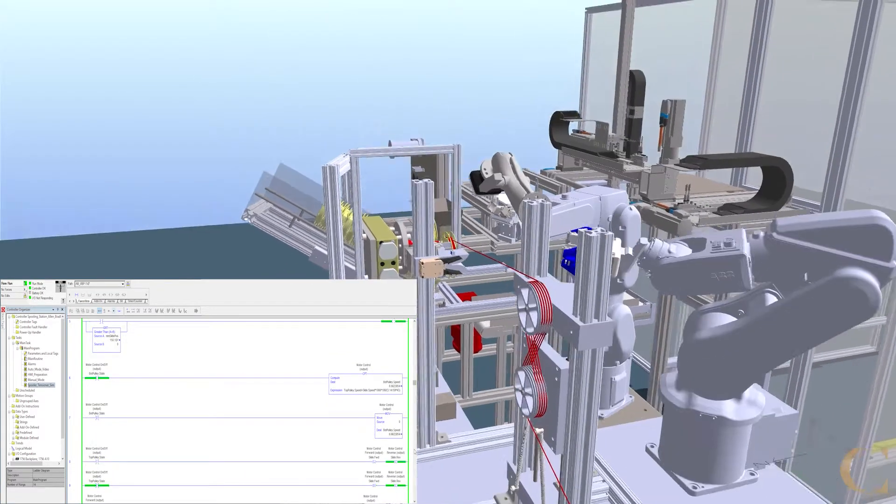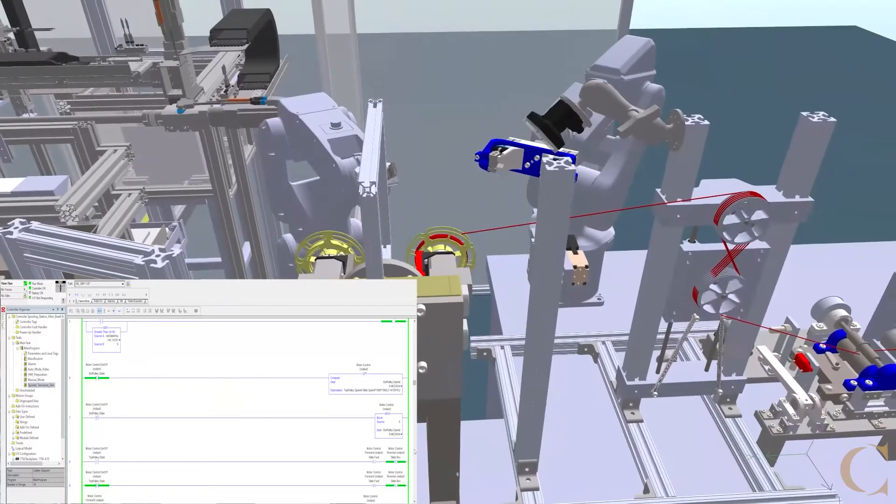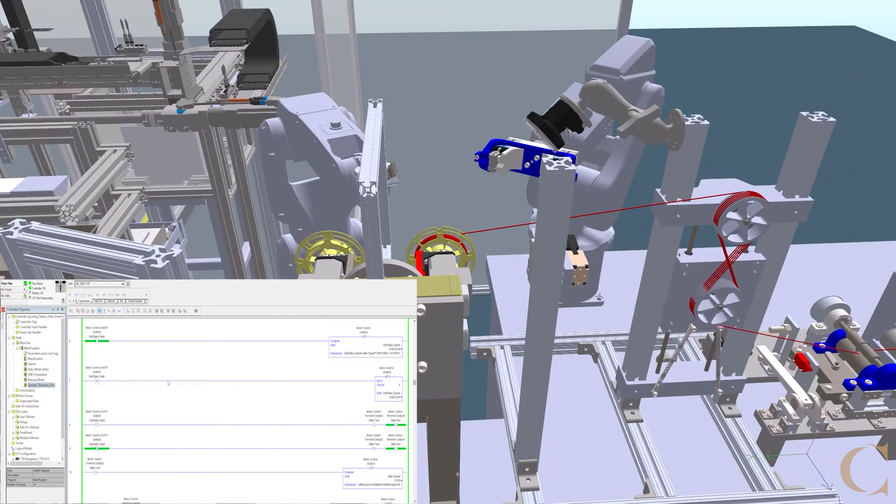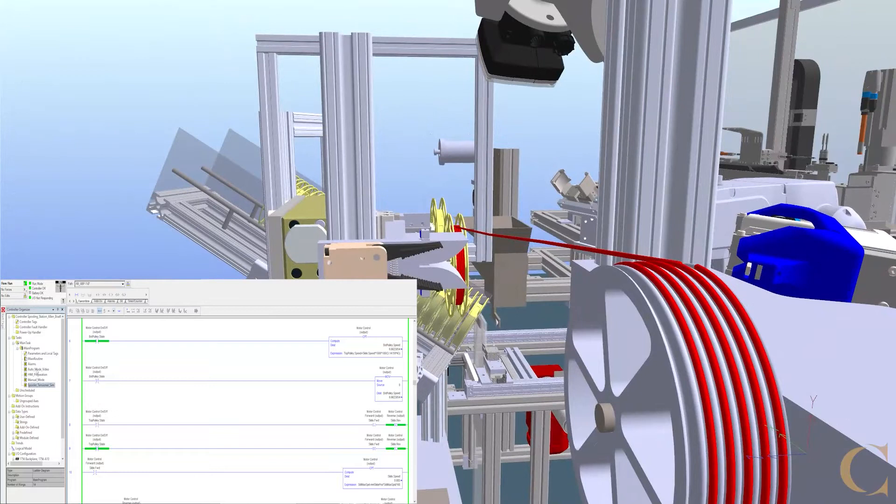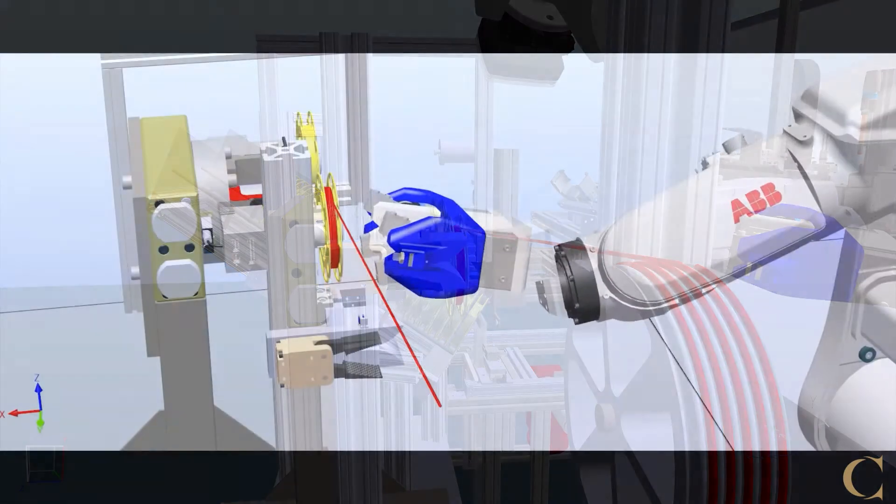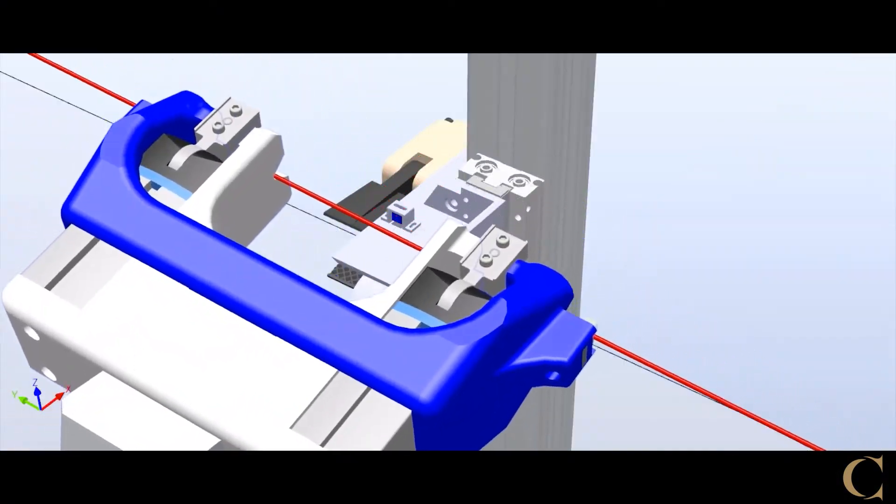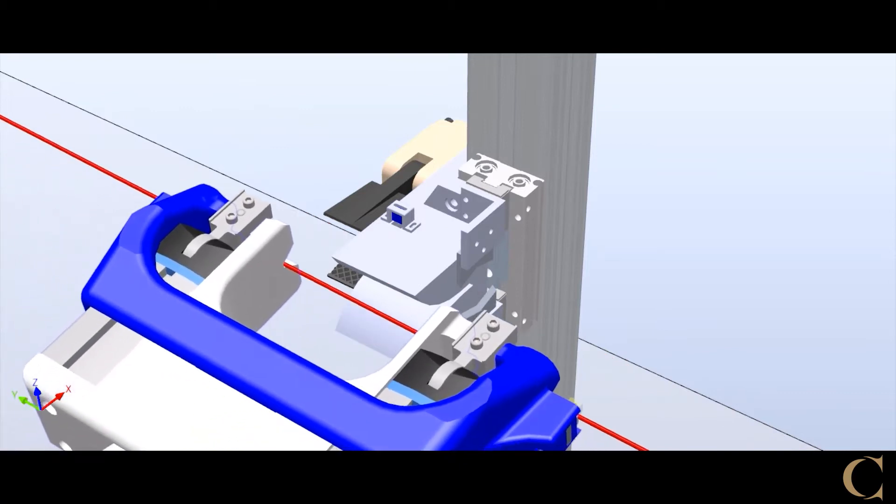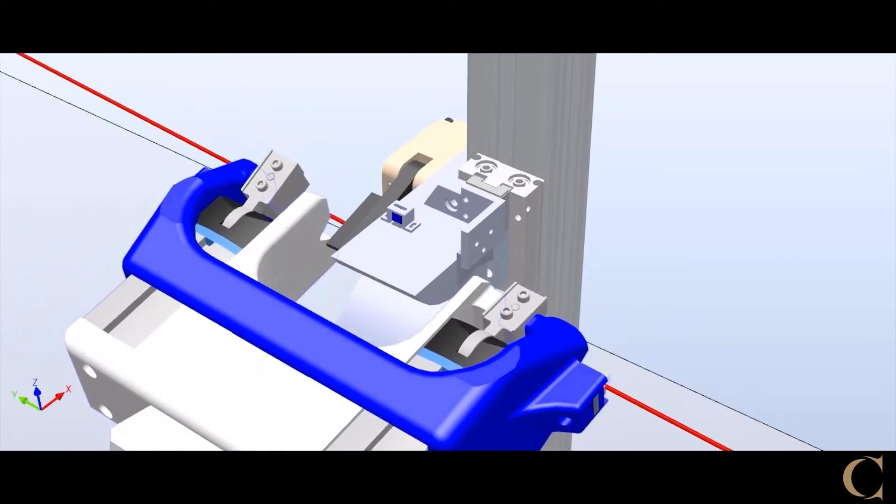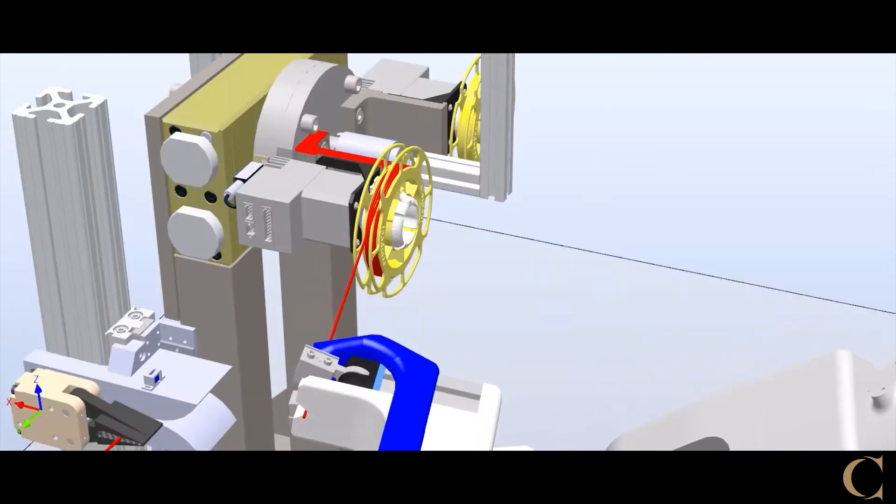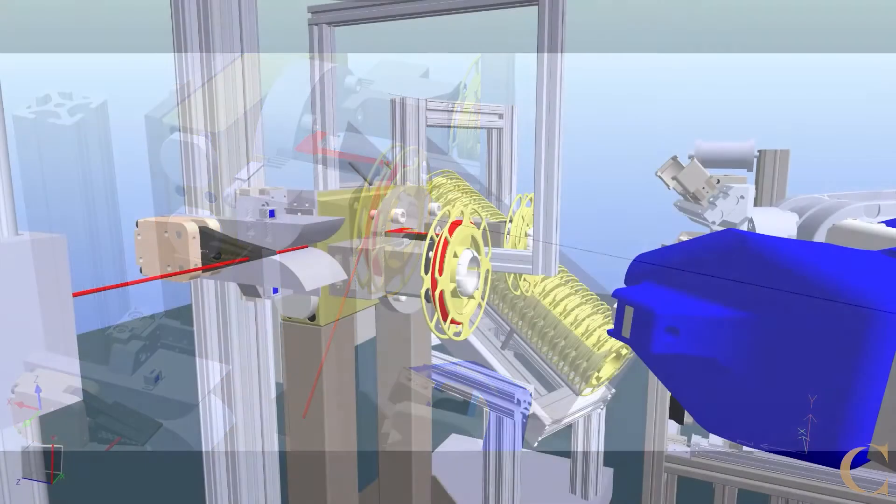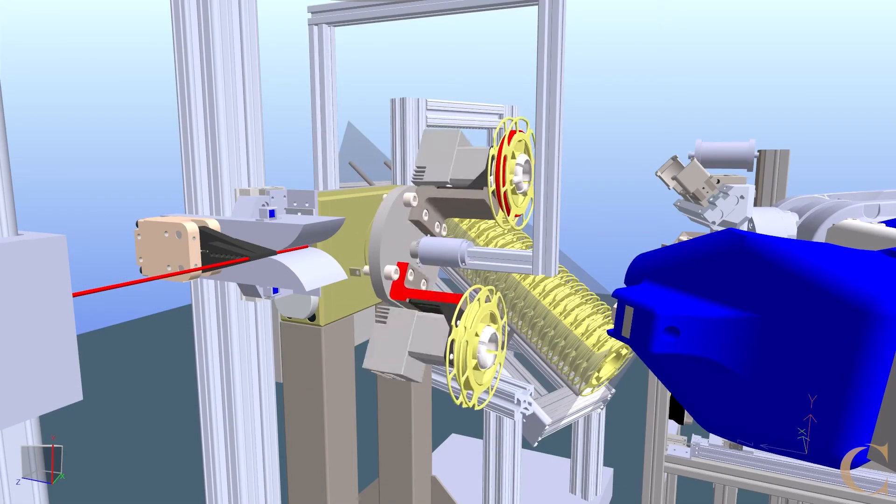Since the extruder never stops extruding, the tensioner's purpose is to maintain a reservoir of filament when spooling is stopped and completed spools of filament are swapped out. After 5 meters of filament is spun, the robot places the filament at a cutting station where it is cut and held in place. Then the ABB robot secures the lagging strand of filament into a clip on the spool.